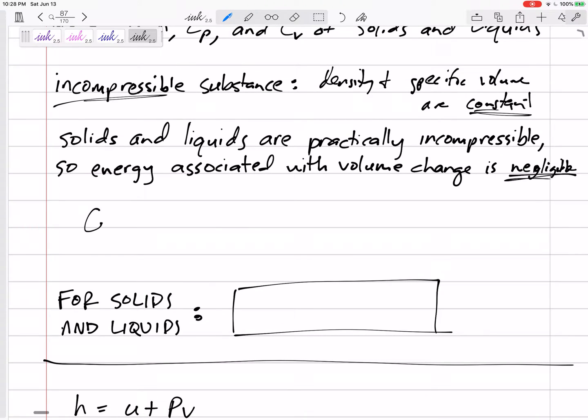So it's not like there's a Cv or a Cp for solids and liquids. There's just one C value. Now, the table might say Cp, but there's just one C value for solids and liquids.